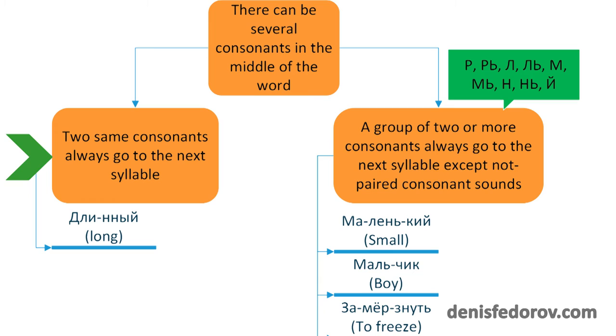Here are the rules how to deal with such situations. Two same consonants always go to next syllable. A group of two and more consonants always go to the next syllable, like in the previous rule, except not paired consonant sounds. Let's look at these specifications in details.